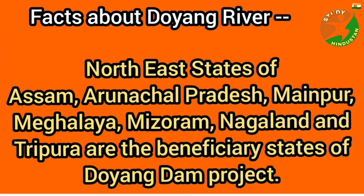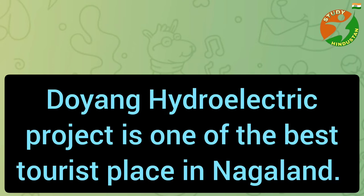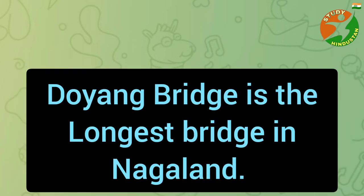Facts about Doyang river: the northeast states of Assam, Arunachal Pradesh, Manipur, Meghalaya, Mizoram, Nagaland, and Tripura are the beneficiary states of the Doyang river dam project. The Doyang hydroelectric project is one of the best tourist places in Nagaland. Doyang bridge is the longest bridge in Nagaland.